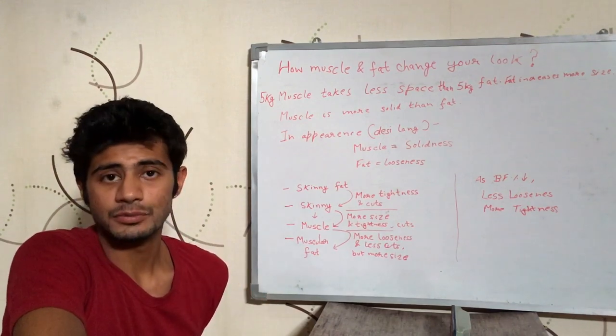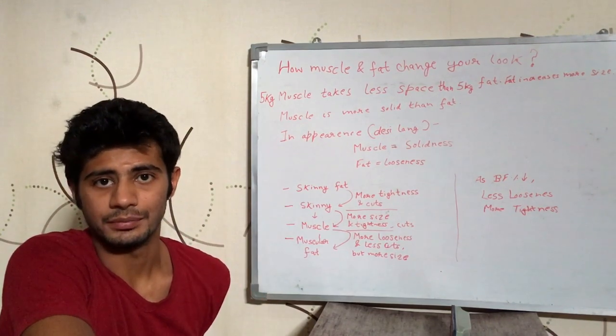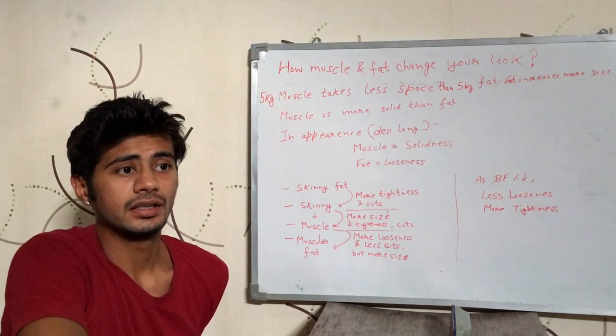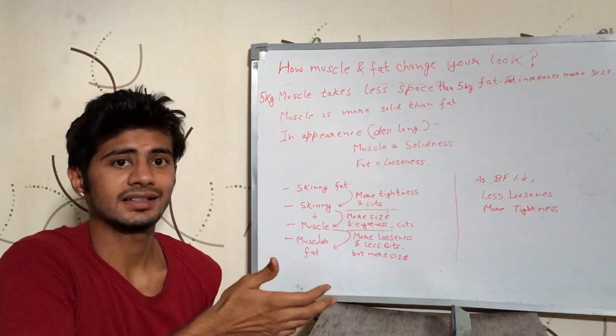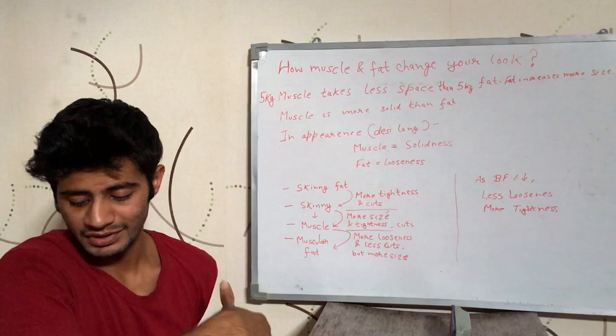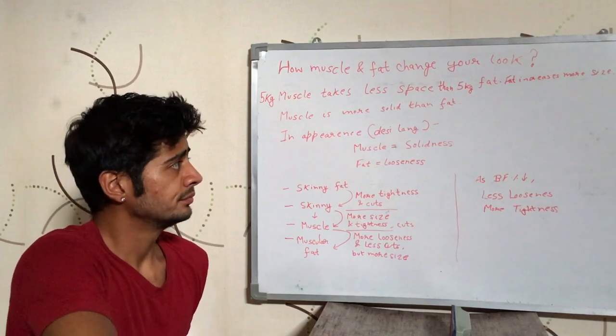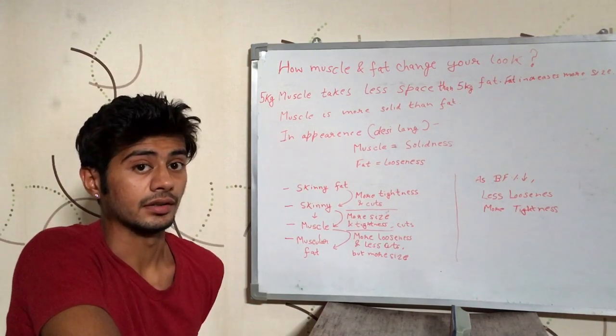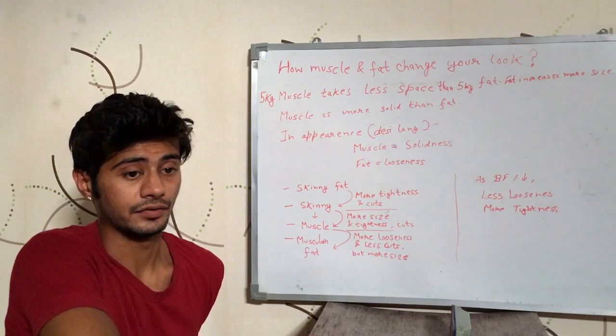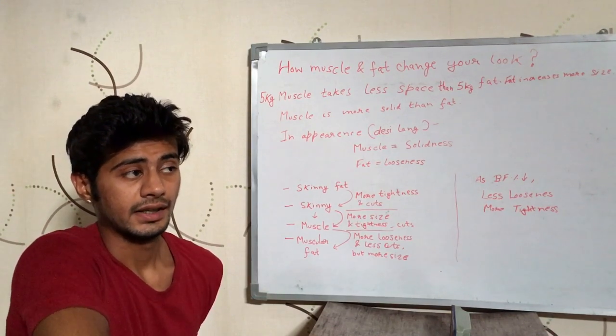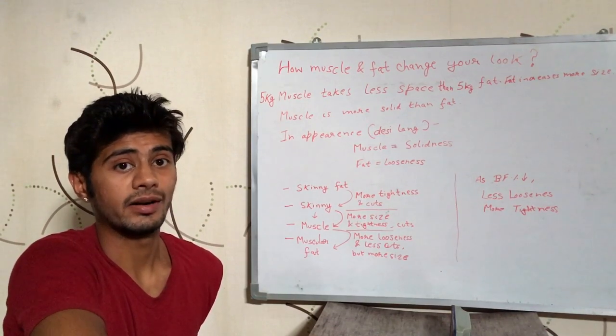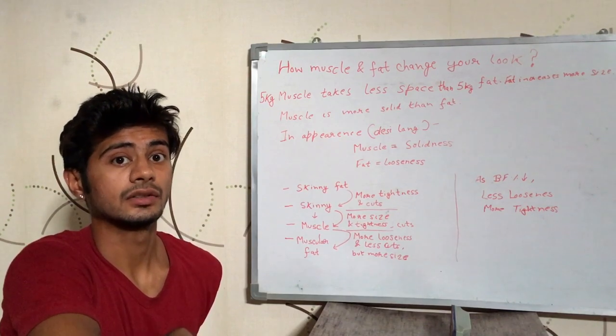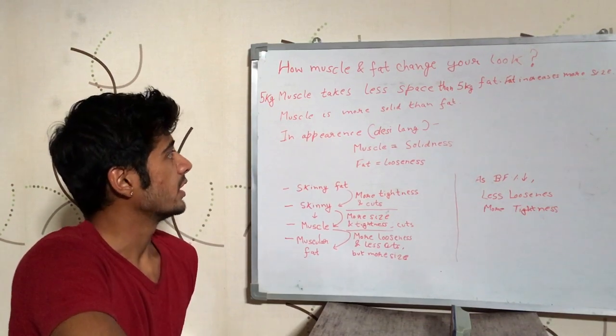So if you gain 2 kilograms of fat on your arms, then you would gain more size as compared to 2 kilograms of muscle on your arms. So if you are gaining size really quickly, if your size is increasing very quickly, there is really high probability that you are gaining size through fat, not through muscle.